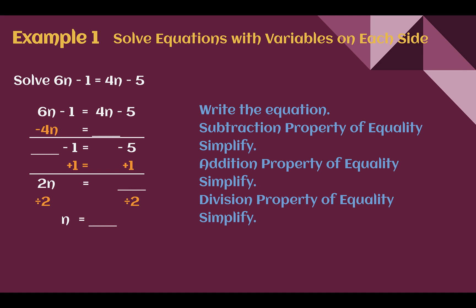Example 1: Solve equations with variables on each side. Solve 6n minus 1 equals 4n minus 5. There's a variable on each side, so we're going to eliminate it off of one side first by doing the opposite operation so that it makes 0. We subtract 4n from both sides. Simplifying: 6n minus 4n gives us 2n, and 4n minus 4n is 0.